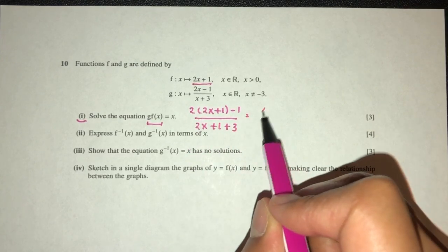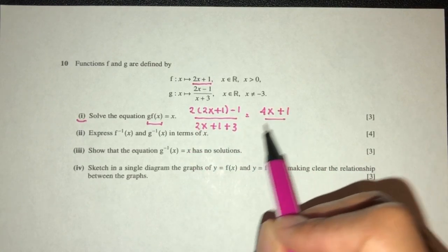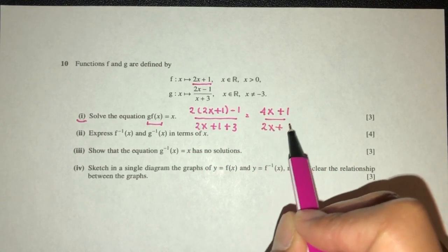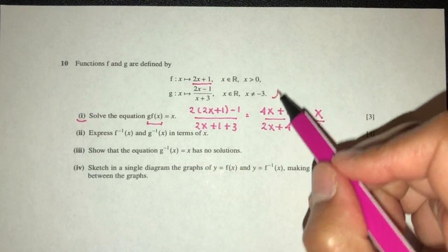Simplified, you will have 4x, so plus 2 minus 1 is plus 1, over 2x plus 4, is equal to the value of x. So first thing first, cross multiply, let's continue over here.